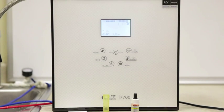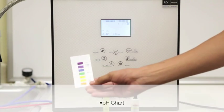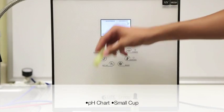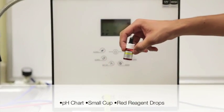Today we'll be showing you how to properly test the pH of your ionized water. What you'll need will be the pH chart, small glass to collect water in, and the red reagent drops that came with your ionizer.